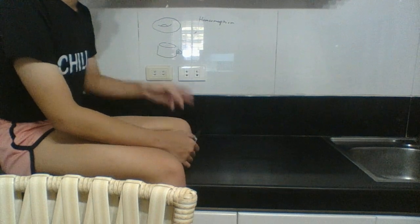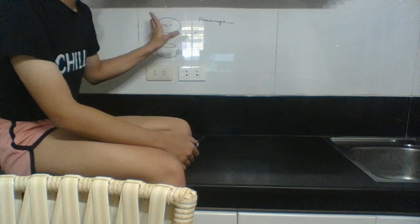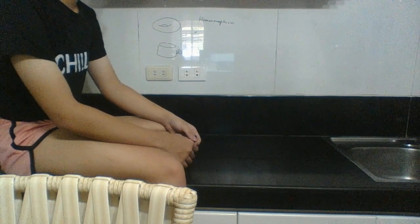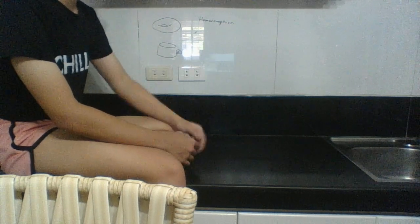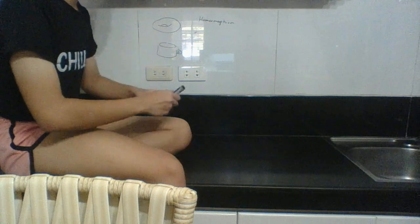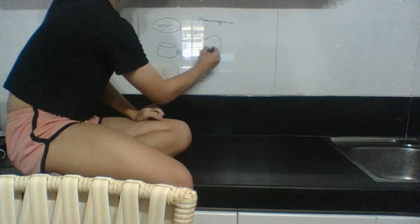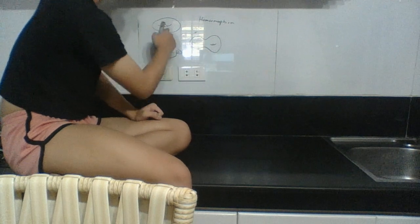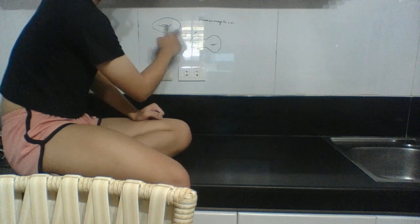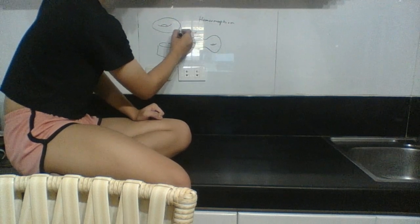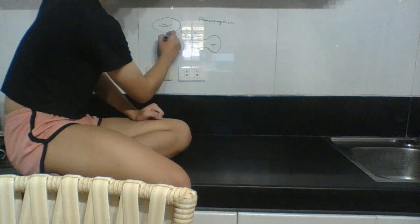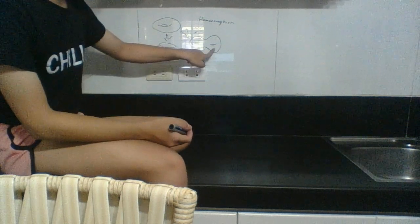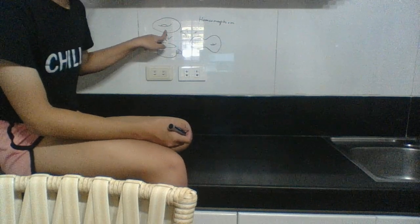A homeomorphism deforms one topological space into another while preserving the global structure. When we morph the coffee mug into the doughnut, we don't puncture a hole inside it. That's also why a doughnut is not the same as a two-hole doughnut — there's an extra hole in the latter. And there's another reason why this doughnut is not the same as a ball or a sphere.